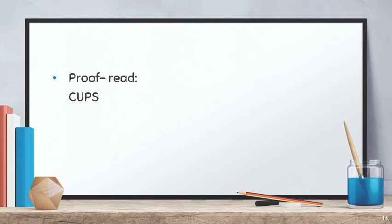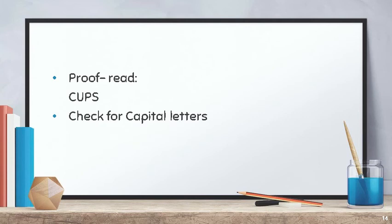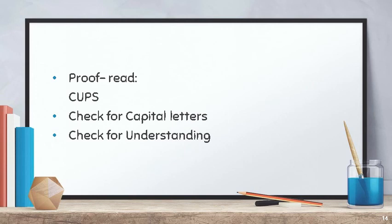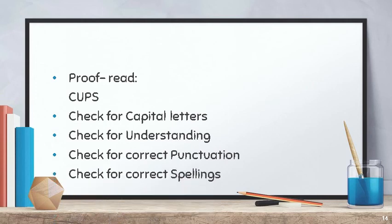Proofread. To remember what to proofread, just memorize the word CUPS. C stands for capital letters. U stands for understanding. P stands for punctuation. S stands for spellings.